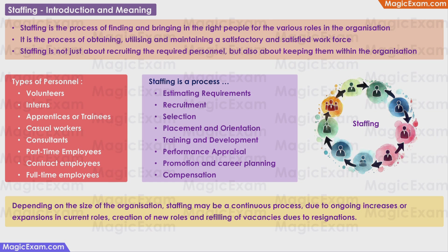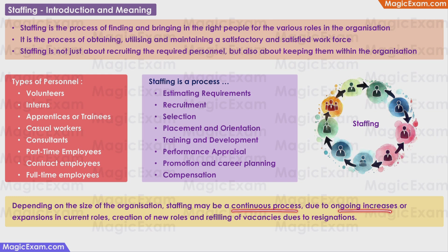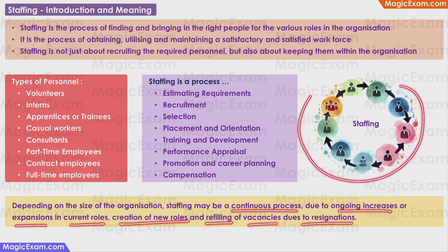Staffing is a process. It starts with estimating requirements, then recruitment, selection, placement and orientation, training and development, performance appraisal, promotion, career planning, and compensation. Compensation means remuneration or salary for the work done. Depending on the size of the organization, staffing is a continuous process — due to ongoing expansions, creation of new roles, and refilling vacancies due to resignations, staffing has to be done continuously.